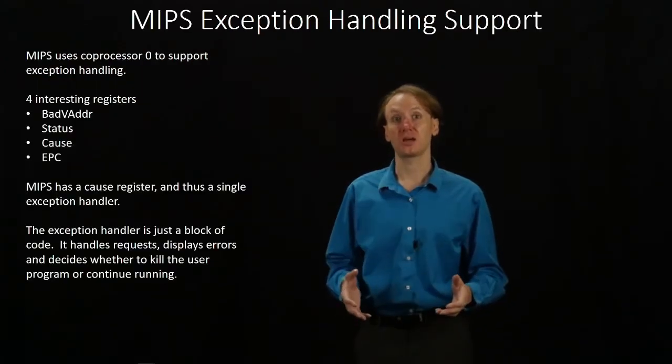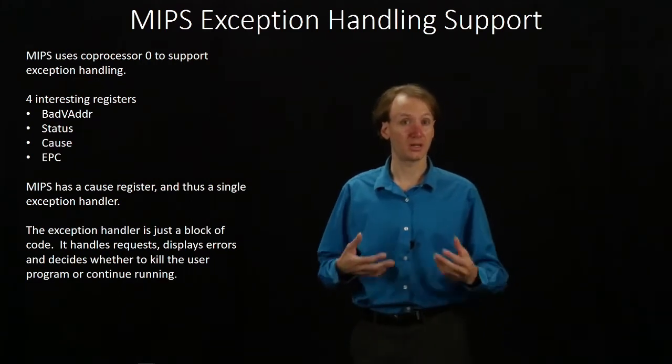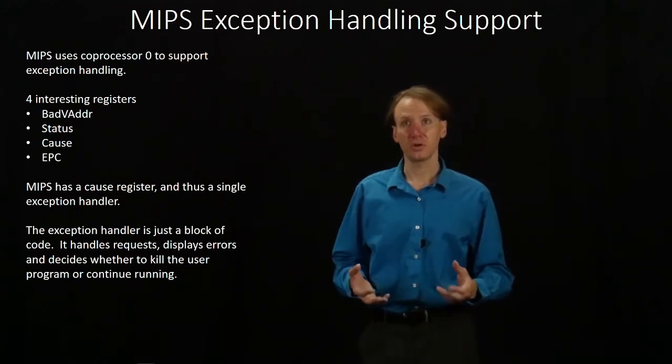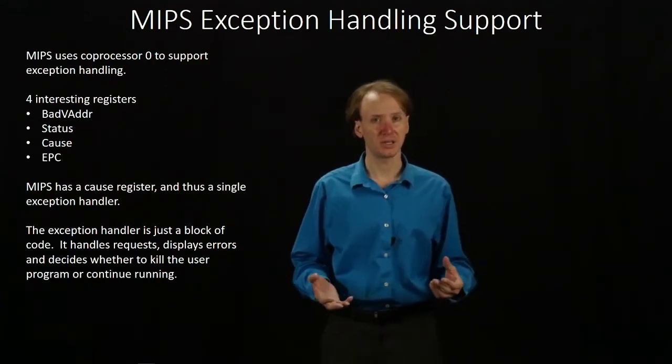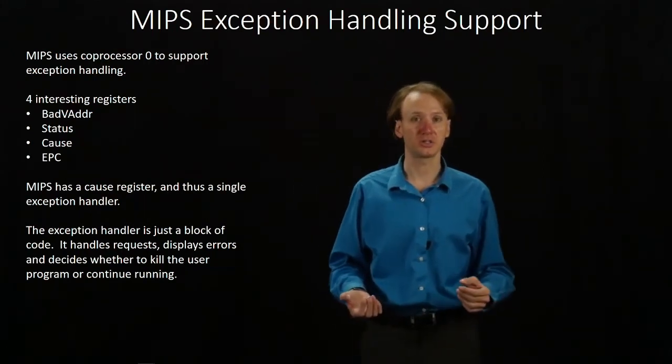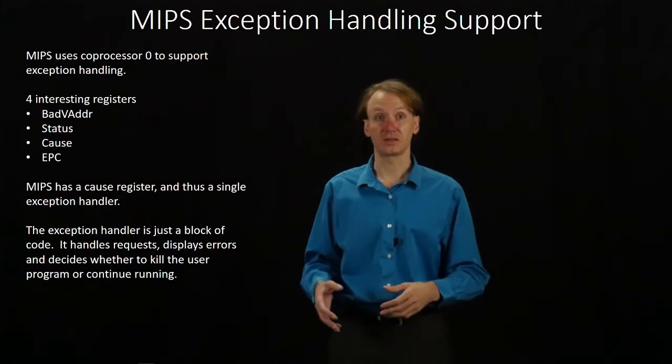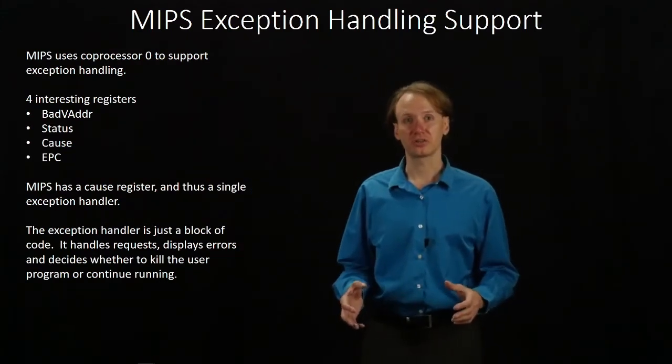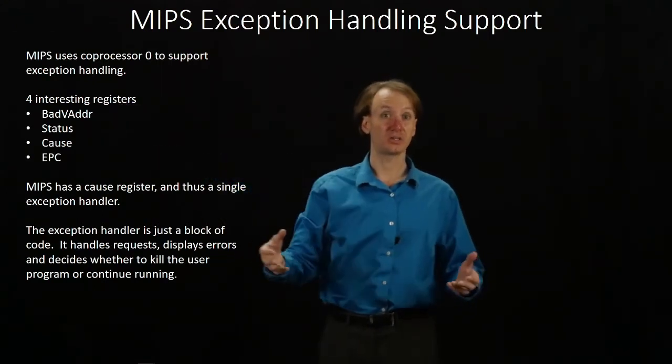Now we'll look at how MIPS actually handles exceptions. MIPS has a coprocessor to support exception handling, similar to what we had for floating point processing, except we'll be using coprocessor 0 instead of coprocessor 1. It has less functionality since it's related to exception handling and not floating point operations. There are four registers interesting to us for exception handling support, which you can see in QTSpim. These include the bad address register, which tells us if we gave an unacceptable address — for example, an unaligned address would show up there.